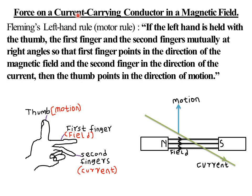Next, we look at the force on a current-carrying conductor in a magnetic field. To predict that force, we use Fleming's left-hand rule, also called the motor rule. It states that if the left hand is held with the thumb, the first finger, and the second finger mutually at right angles, so that the first finger points in the direction of the magnetic field and the second finger in the direction of the current, then the thumb points in the direction of motion.